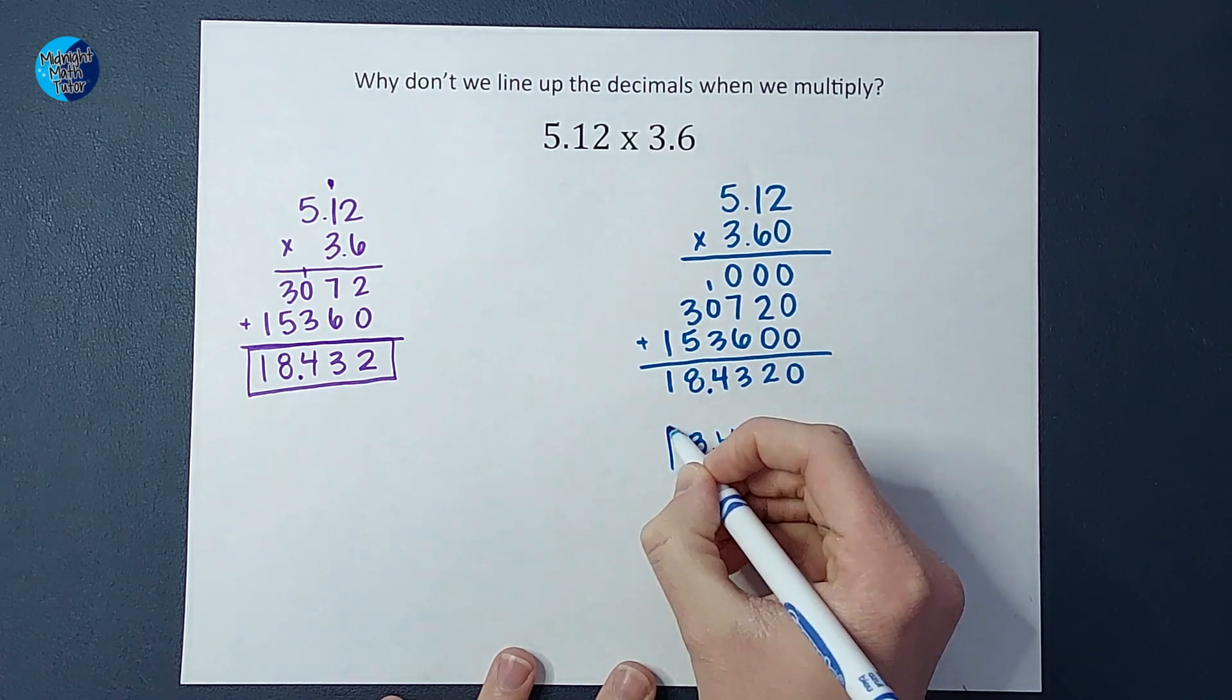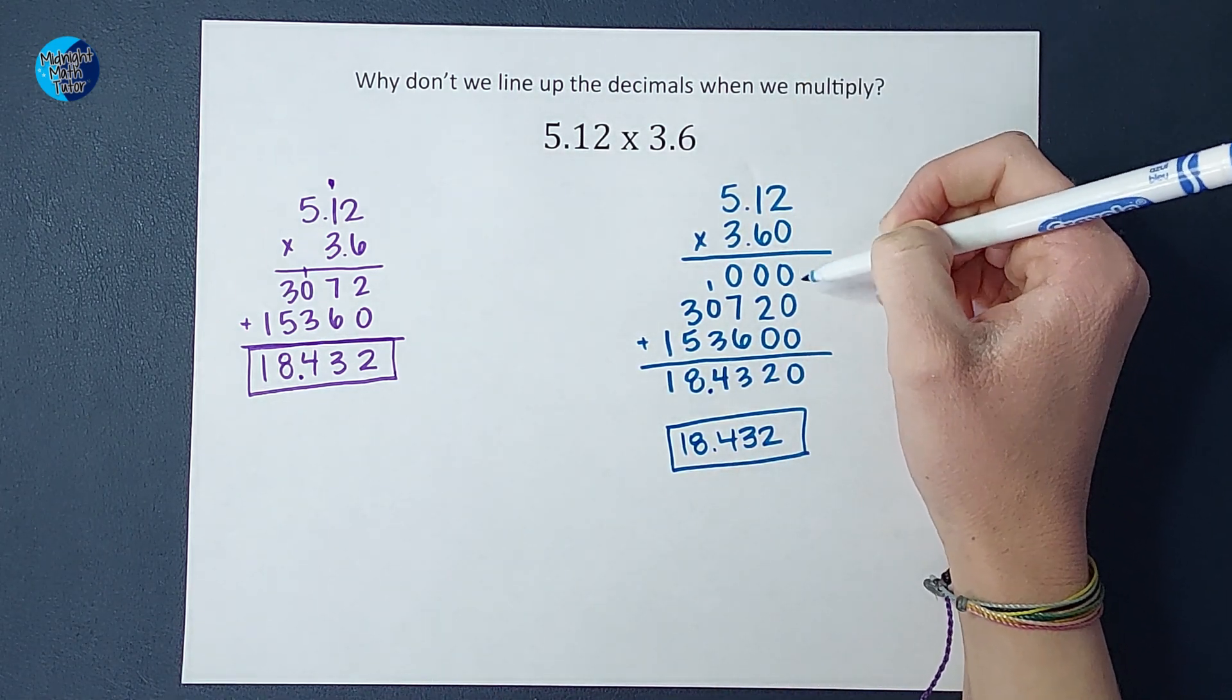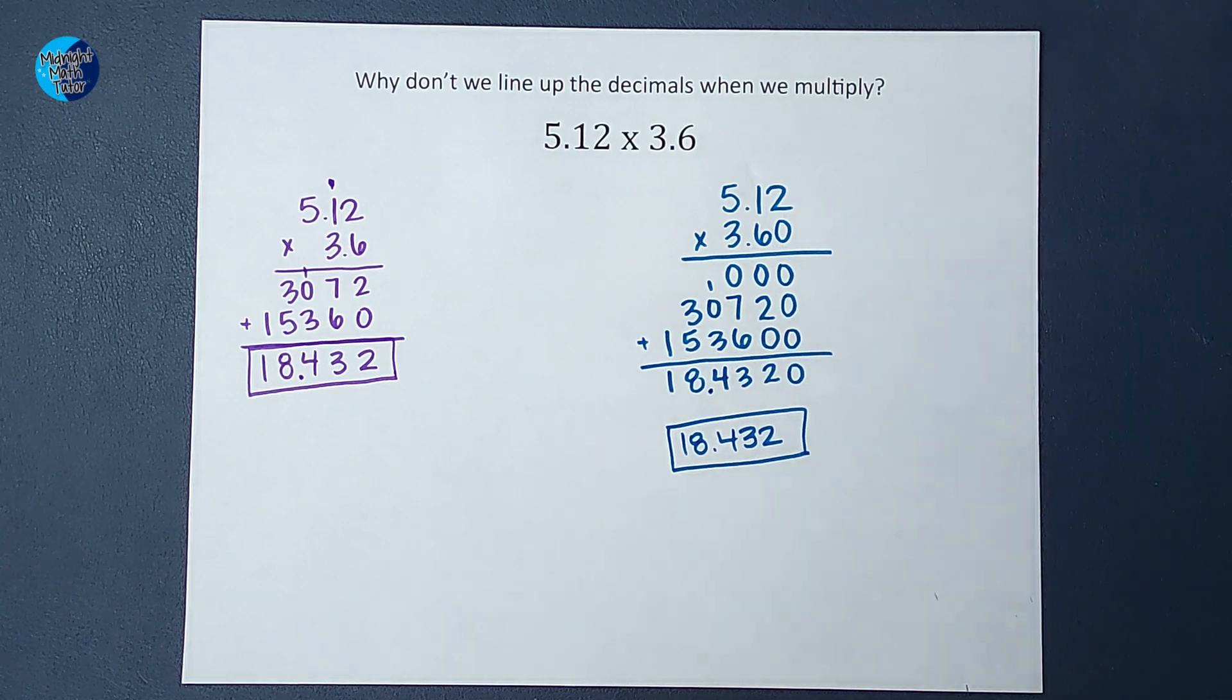Okay, so do you see what happened there? Making the decimals line up just gave me an extra zero that just added a zero on the back that I didn't need.